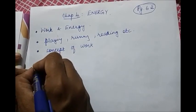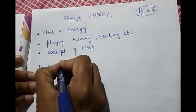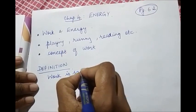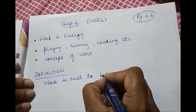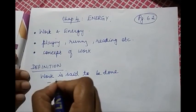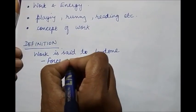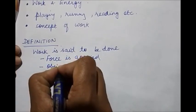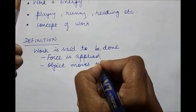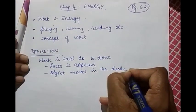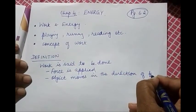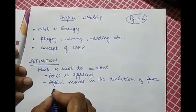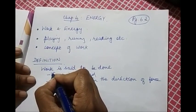First let's start with the definition of work. Work is said to be done when force is applied and object moves in the direction of force. So there are two things involved in work to be done. First is we must apply a force, and the next important thing is the object must move in the direction of force. Then only we can say work is said to be done.